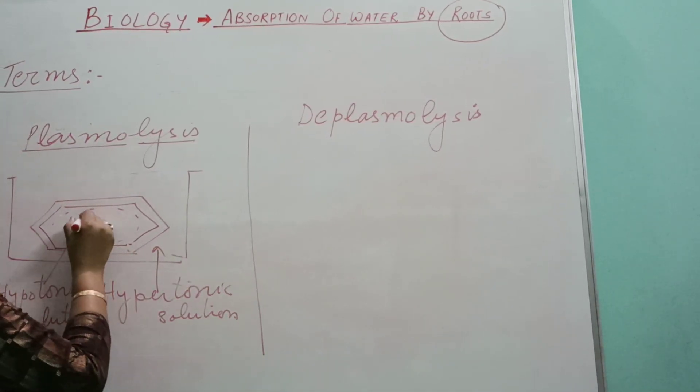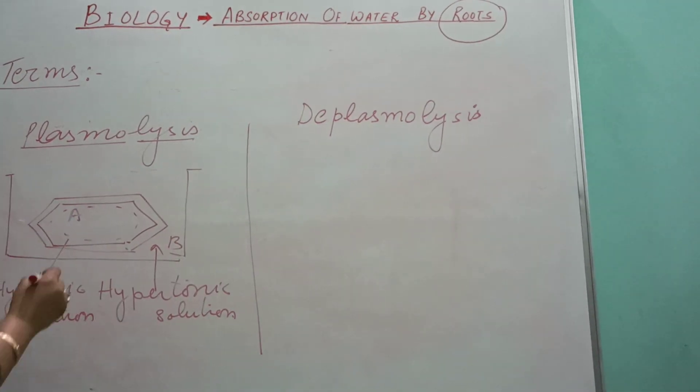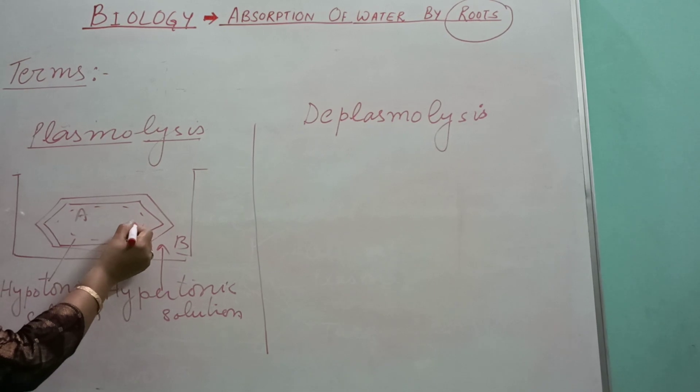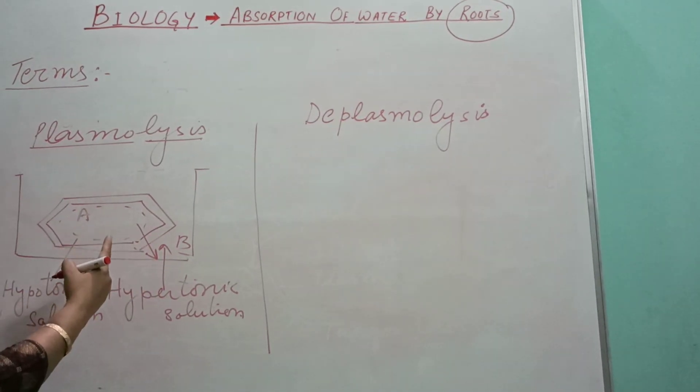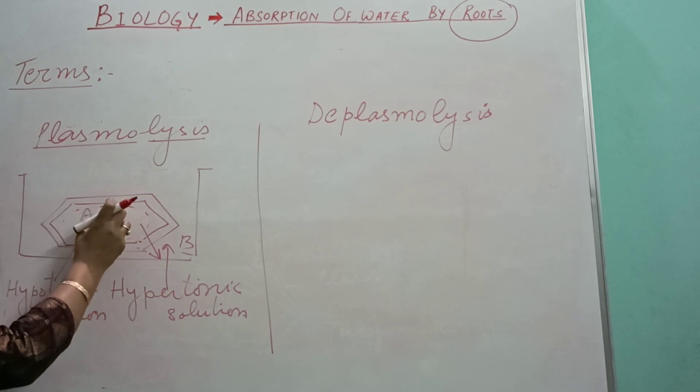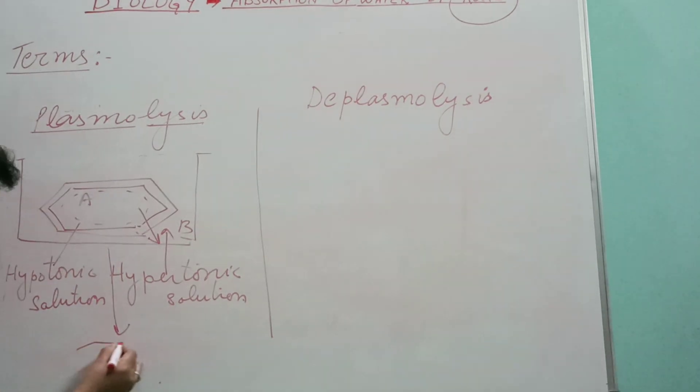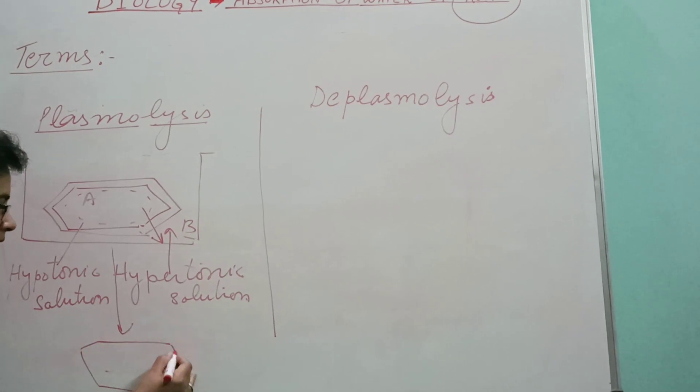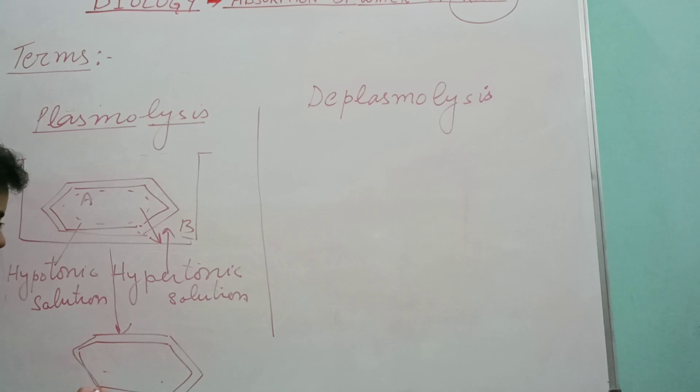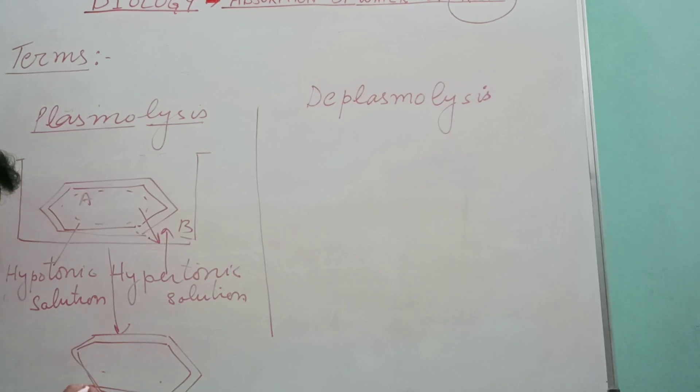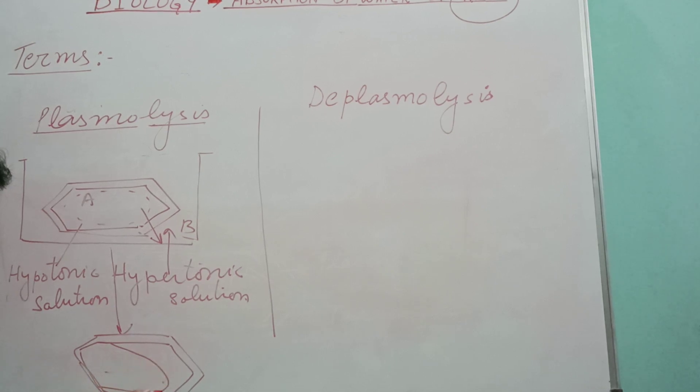It results into the shrinking of plasma membrane along with the cell content. This is the cell wall, as it is rigid, there will be no change. The plasma membrane will shrink like this one. The size of the vacuole which is bigger will reduce.